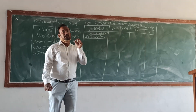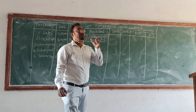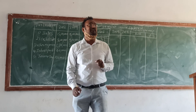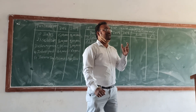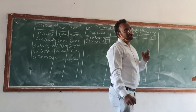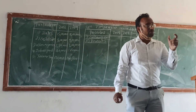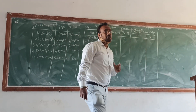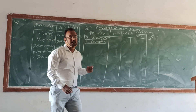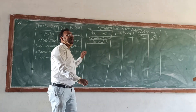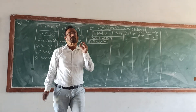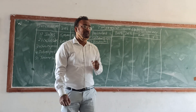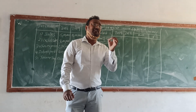Number one under revenues is revenue from operations — this is called sales. So sales is also called revenue from operations. Number two is other incomes.